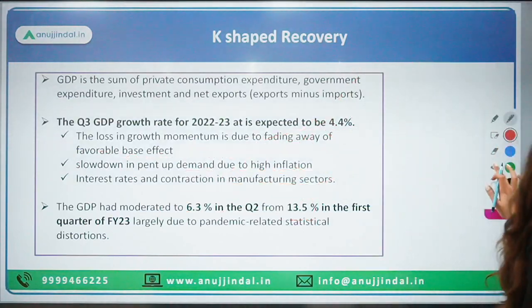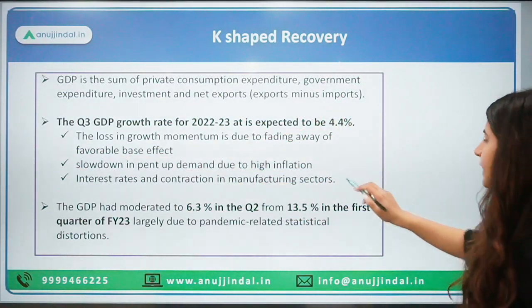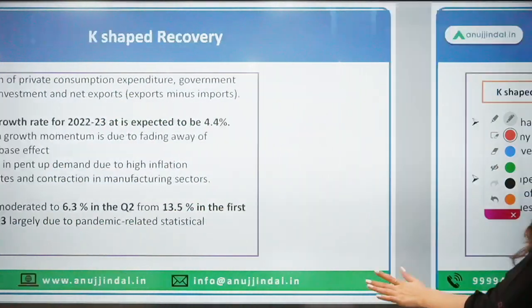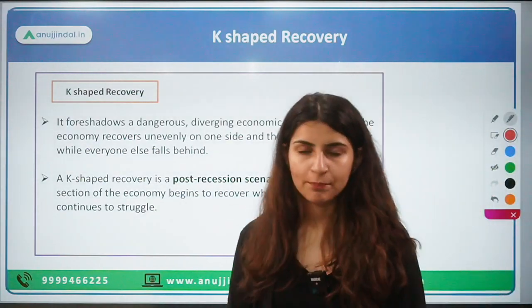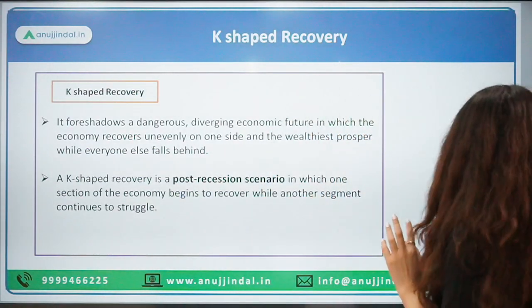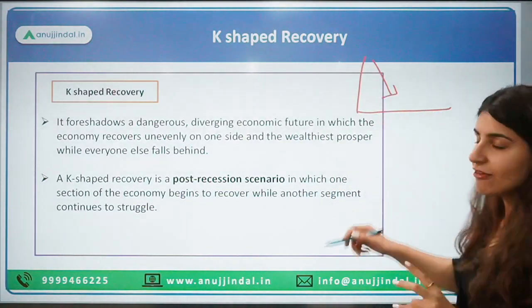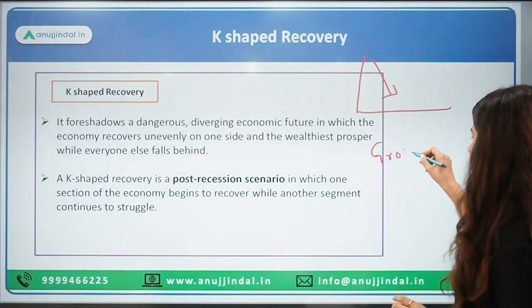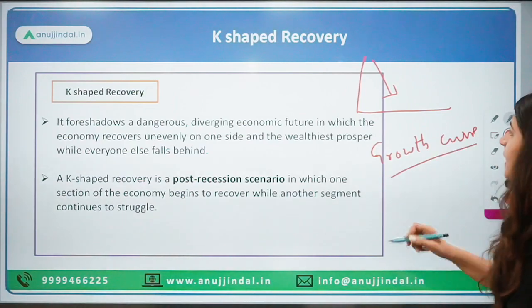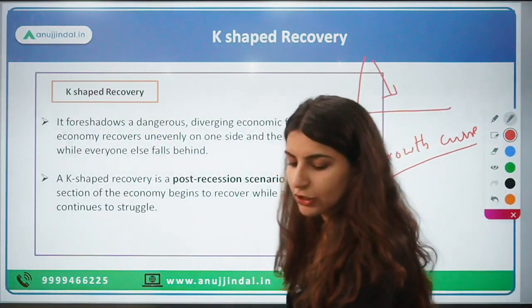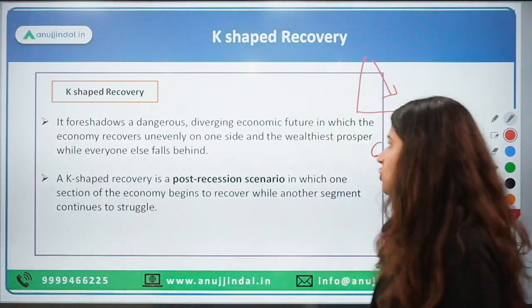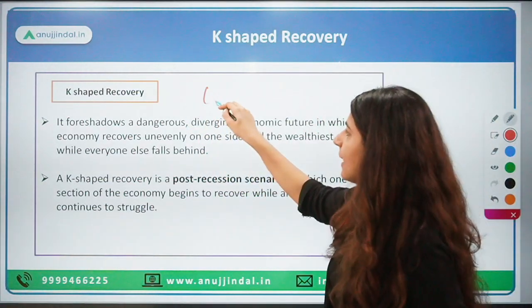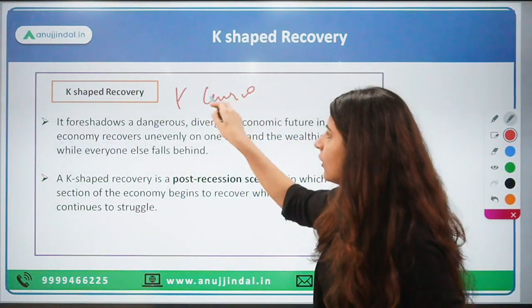Now we've studied the second advance estimates — 4.4 percent in Q3, down from 6.3 percent in the previous quarter. So what is K-shaped recovery? When you map growth on a graph, the shape the GDP growth curve takes is called K-shaped recovery. The curve takes the shape of the letter K.